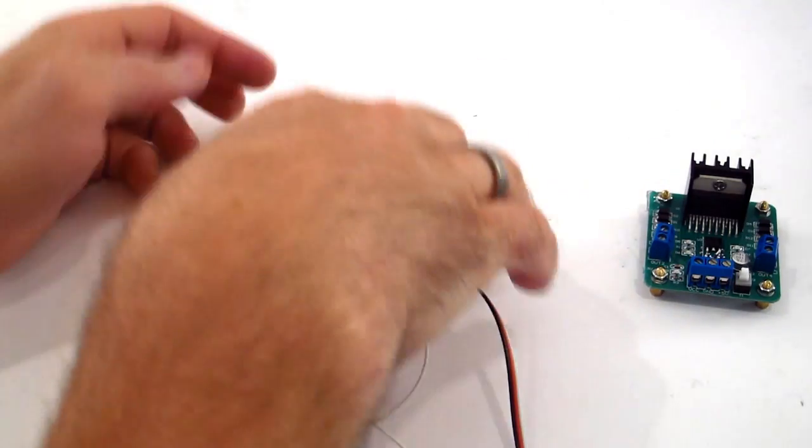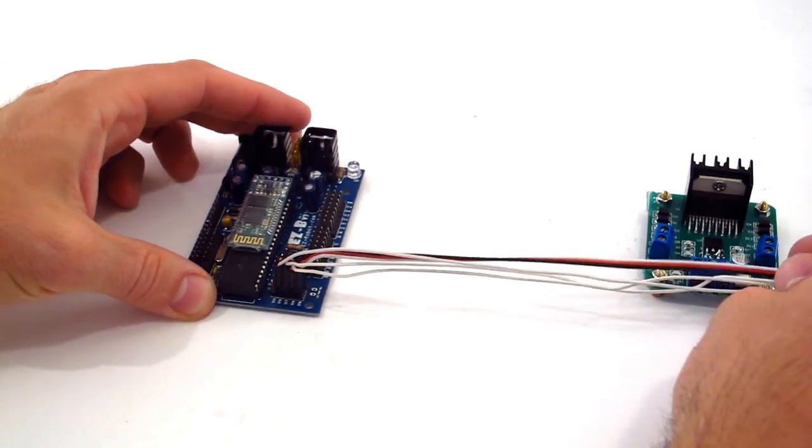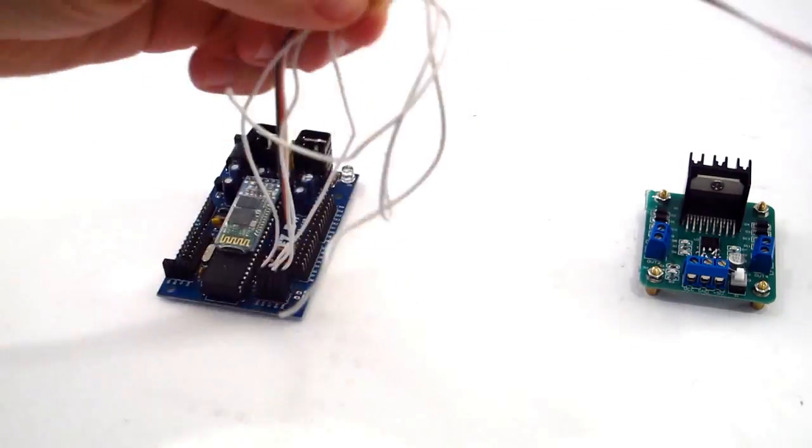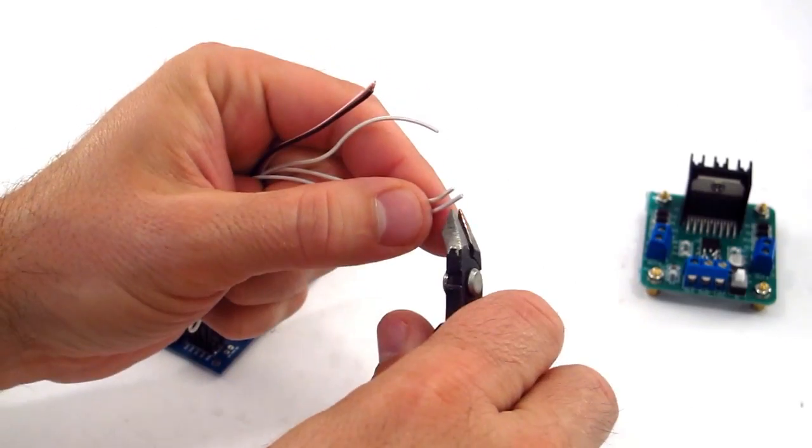Now it's a good idea to find out what distance you need between the controller and the motor driver. So it's best to measure it out first, and then cut. Now let's strip your wires.